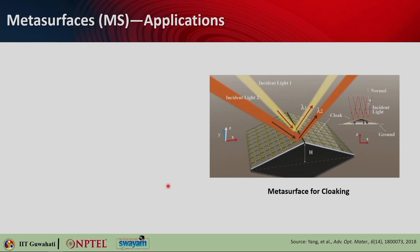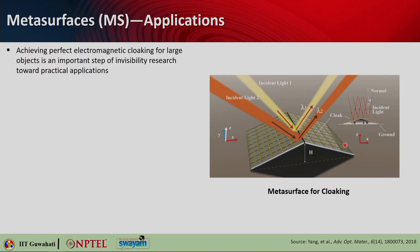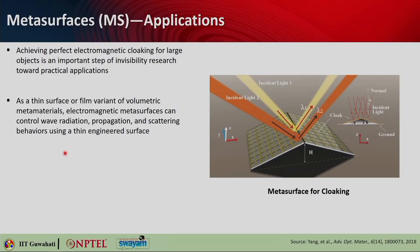An interesting application of metasurfaces is cloaking — hiding objects. The incident light is reflected by the metasurface as if it is reflecting from a flat surface, with no change in the direction of reflection. Whatever is hidden below this metasurface will not be detected because the reflection pattern mimics a flat surface. Achieving perfect electromagnetic cloaking for large objects is very important for invisibility research. Defense applications are an obvious use case — thin metasurfaces instead of large volumetric metamaterials can control wave radiation, propagation, and scattering.